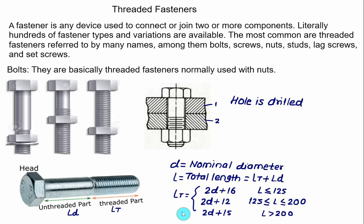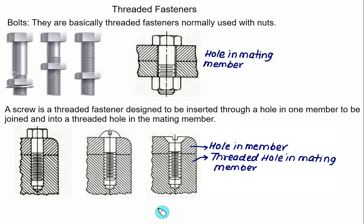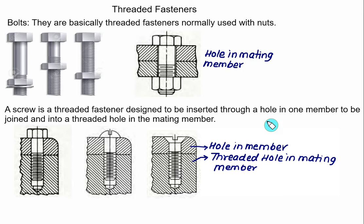These are standardized relations used to find the length of the threaded part and the unthreaded part if we know the total length of the bolt. In the case of a screw, the difference from a bolt is that both members have a simple hole for a bolt, whereas for a screw, the mating member has a threaded hole. This threaded hole serves the purpose of a nut, and therefore the nut is not used with a screw. So a screw is a threaded fastener inserted through a hole in one member and into a threaded hole in the meeting member, which serves as a nut.